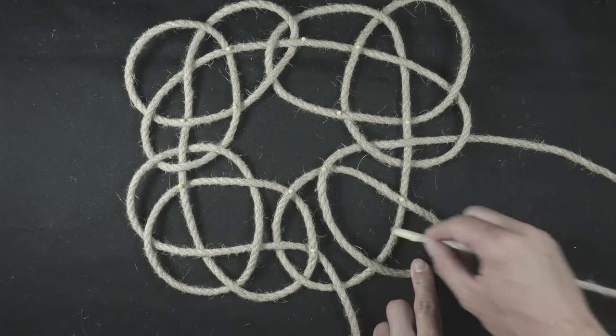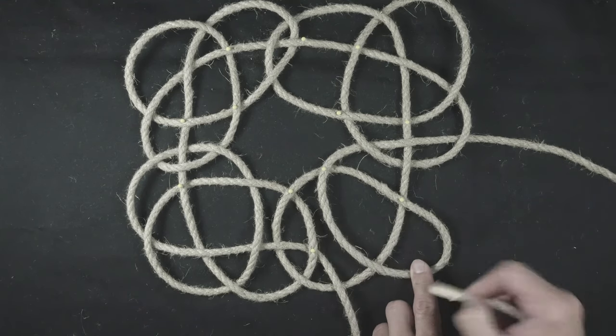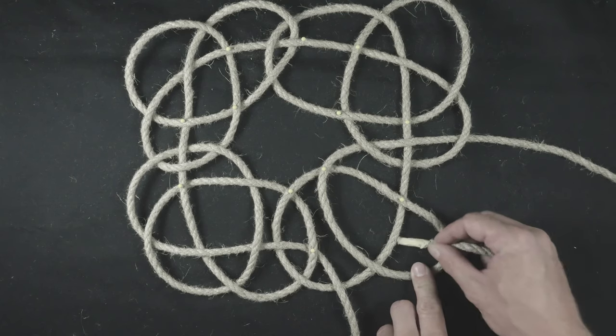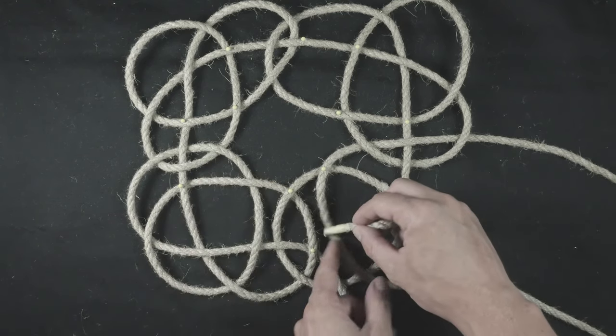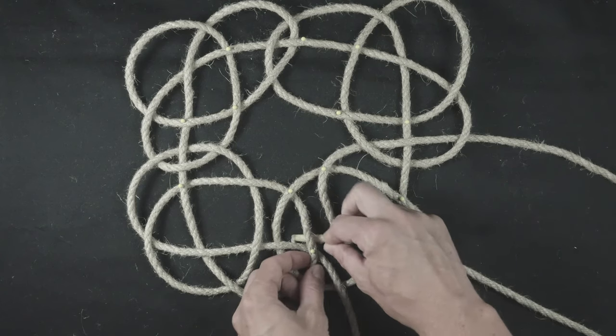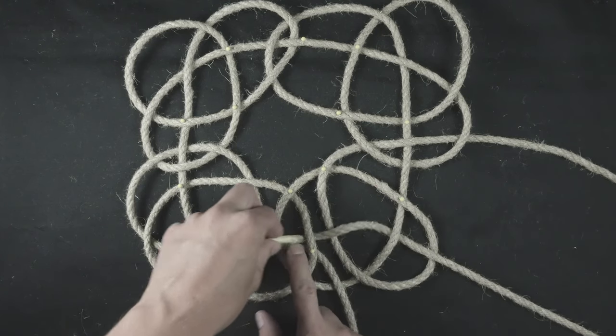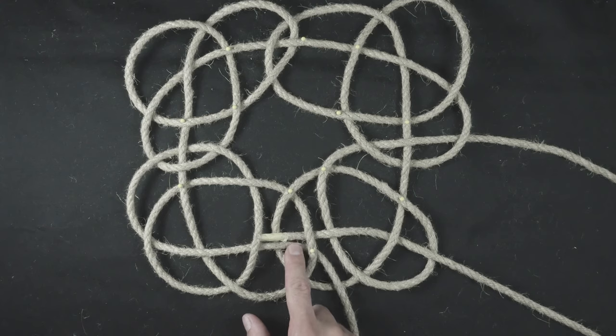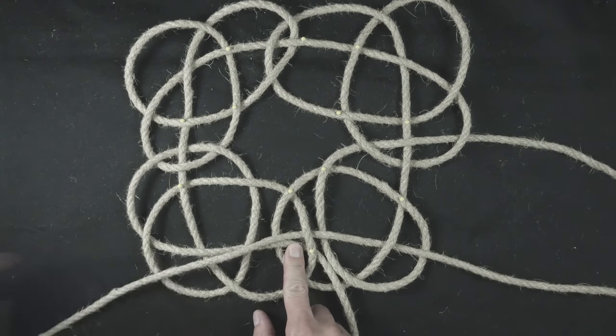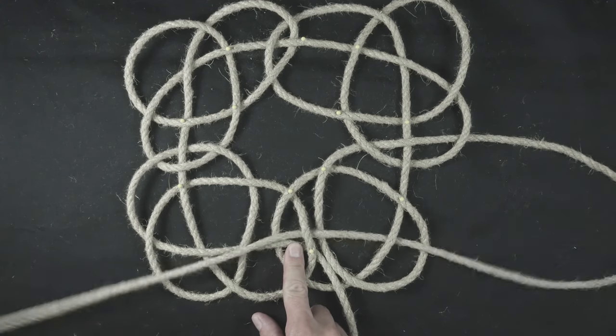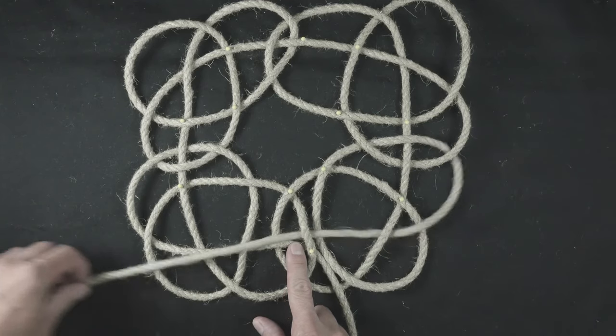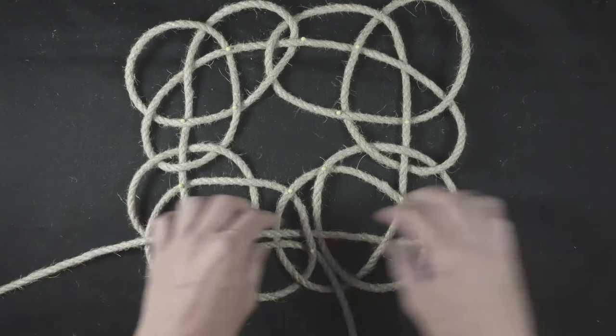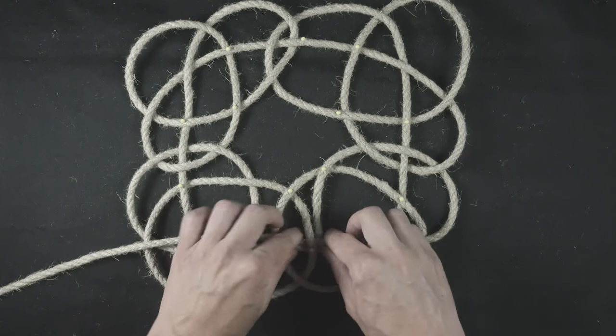Finally, we weave through these strands here, going over, under, over and under, coming alongside the left end. This completes the tying part of our mat.